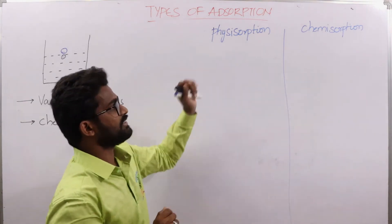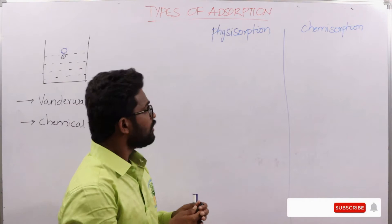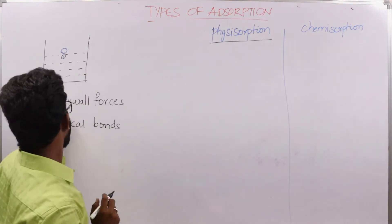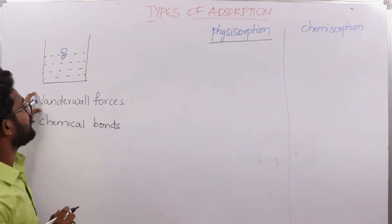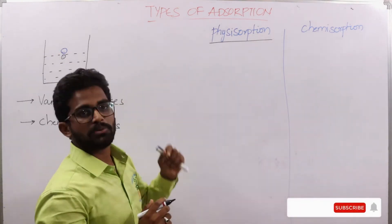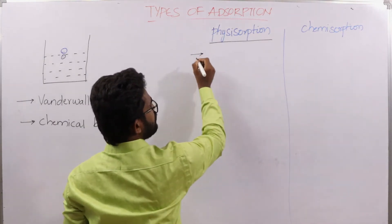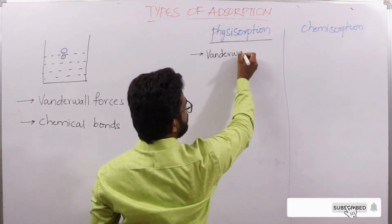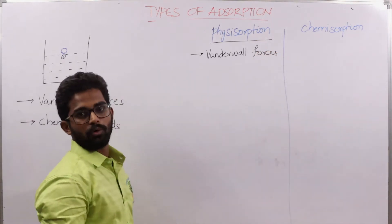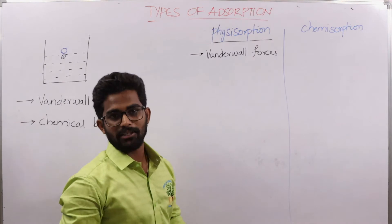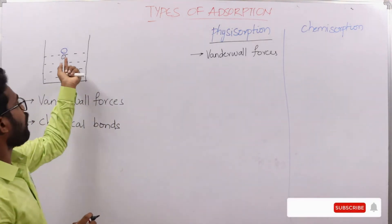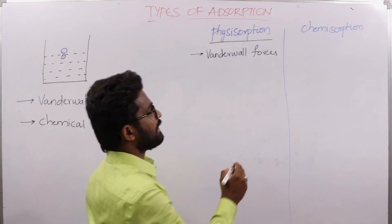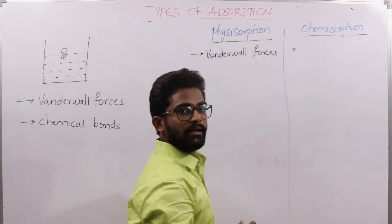Let us understand what is physisorption and what is chemisorption. If adsorption is occurring due to the presence of van der Waals forces between the adsorbent and adsorbate molecules, the adsorption is called physisorption. Whereas in chemisorption, the bond formed between the surface molecule of adsorbent and the adsorbate molecule is chemical in nature — that is, it may be ionic or covalent.